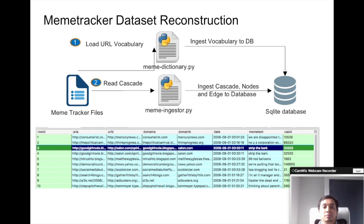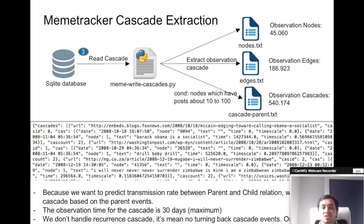We read the meme tracker dataset using a Python script and ingest the dataset into SQLite database and produce this table. This table describes the relationship between domain follower and parent domain.